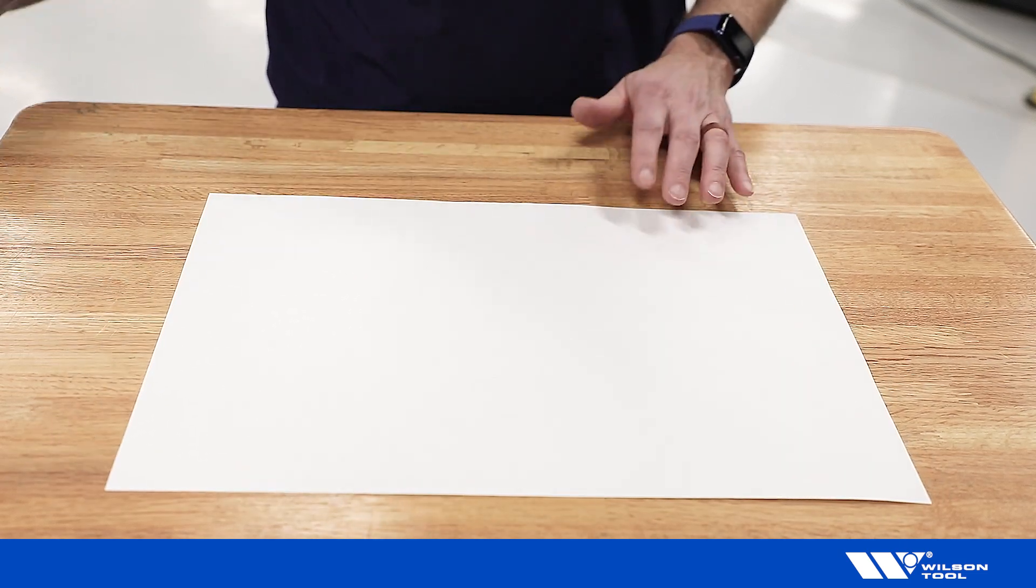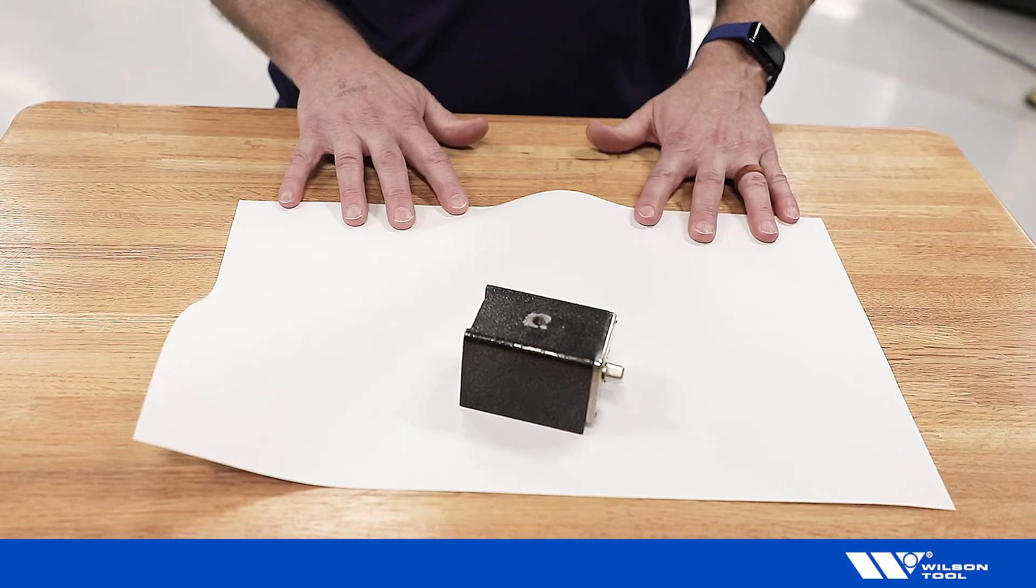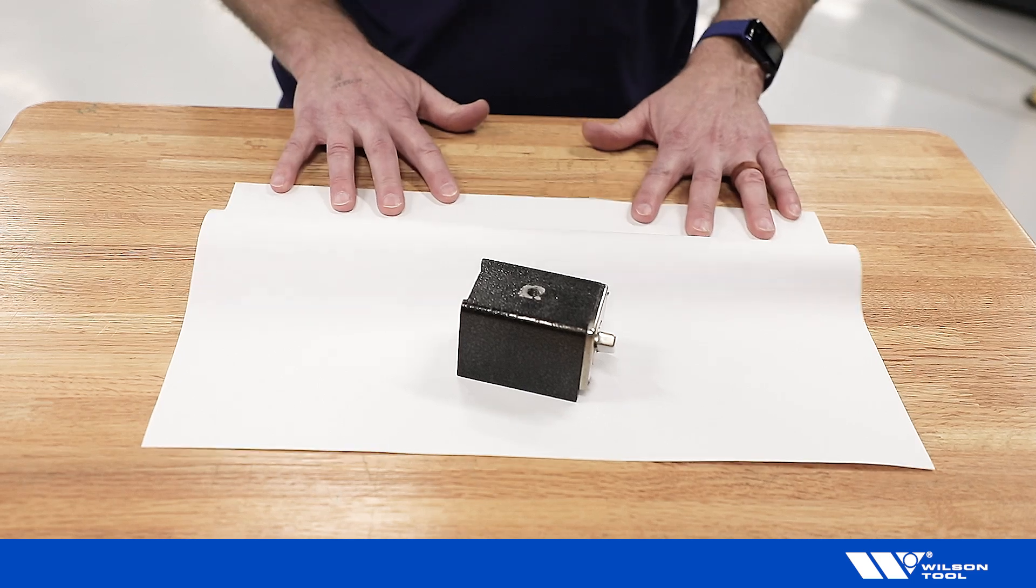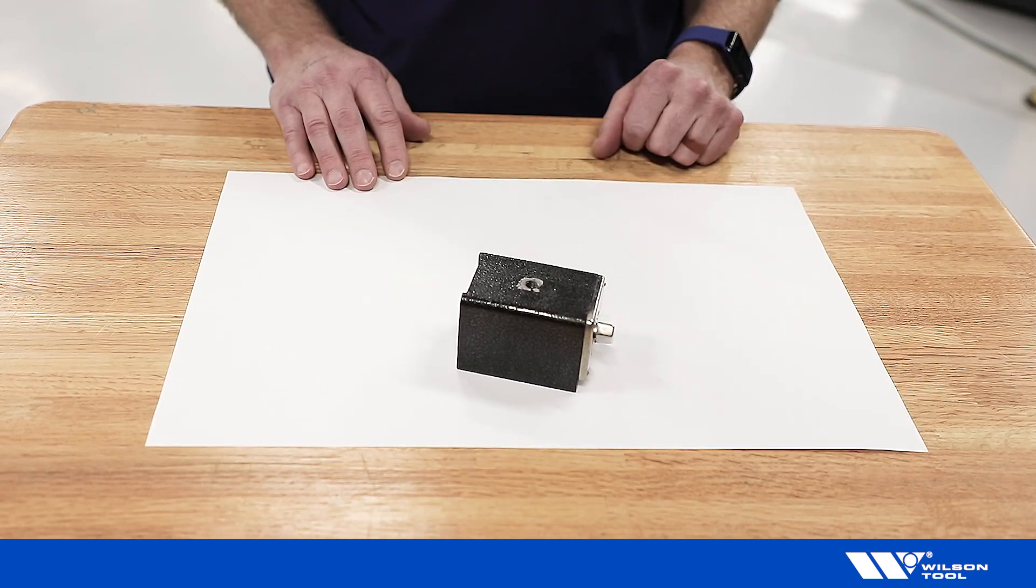Now if we put our resistance on, again to simulate that wheel tool, when the clamps try to move, the sheet's not rigid enough to stay flat while we try to do that. So this just doesn't work because the material is too thin and doesn't have enough rigidity.